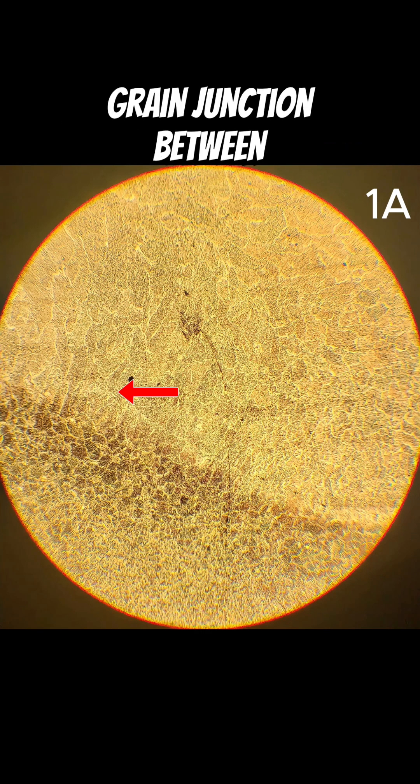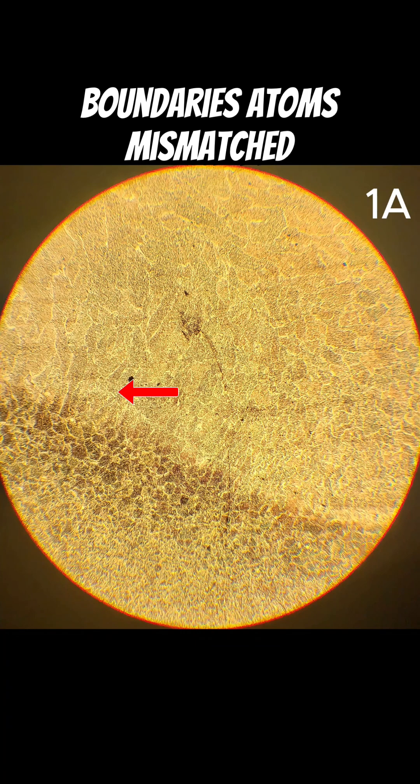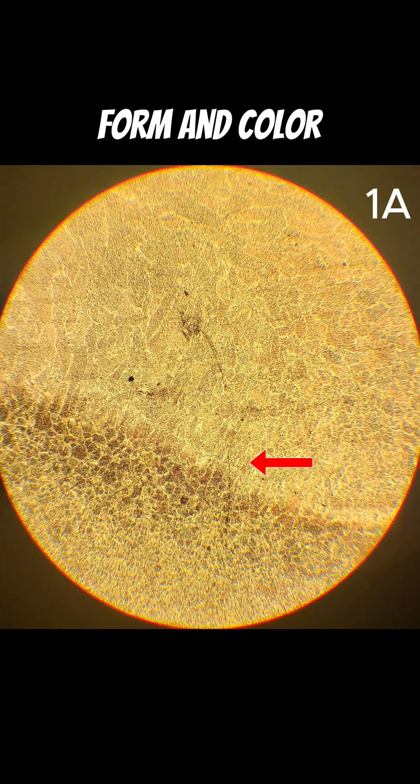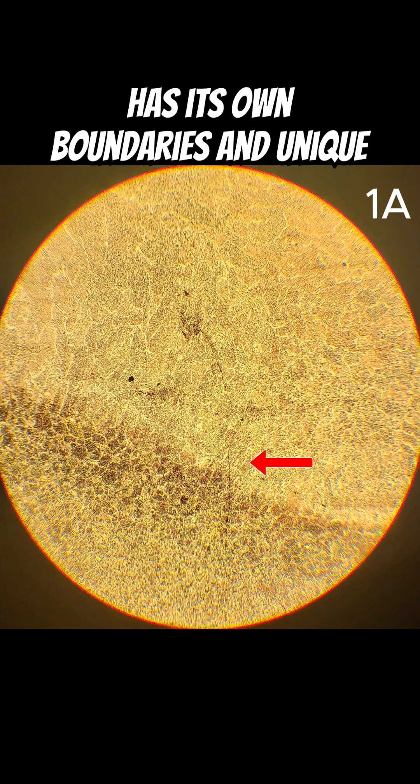Grain junctions between grains are their boundaries where atoms are mismatched in orientation. You can see them in their unique form and color identification. Each grain has its own boundaries and unique form.